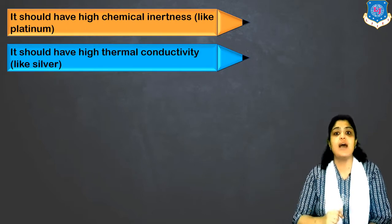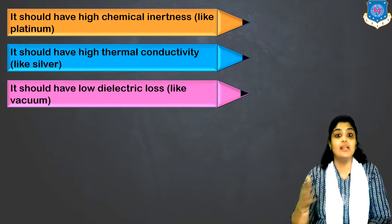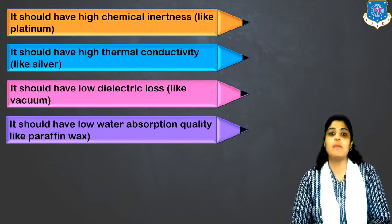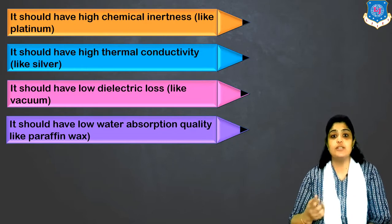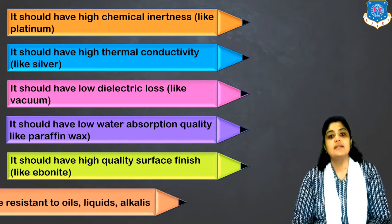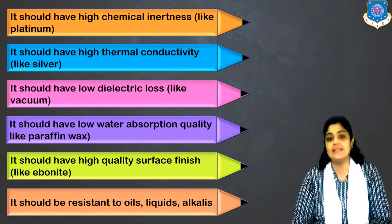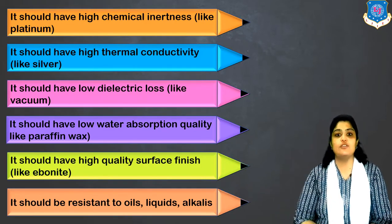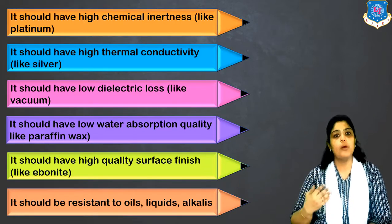It should also have very high thermal conductivity — for example, silver, which has good thermal conductivity. Next, it should have low dielectric loss — like vacuum, which has practically no loss. It should have low water absorption — like paraffin wax — because if a dielectric material absorbs water or humidity, it won't function properly. It should have a high quality finish, like ebonite.